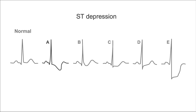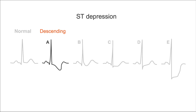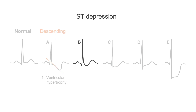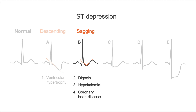Example A is what we call a descending ST-depression. It's a problem of repolarization usually seen in ventricular hypertrophy. Example B is called ST-depression with a sagging morphology — it looks like a ditch or a trench. This type of ST-depression may be caused by digoxin, hypokalemia, or coronary artery disease.